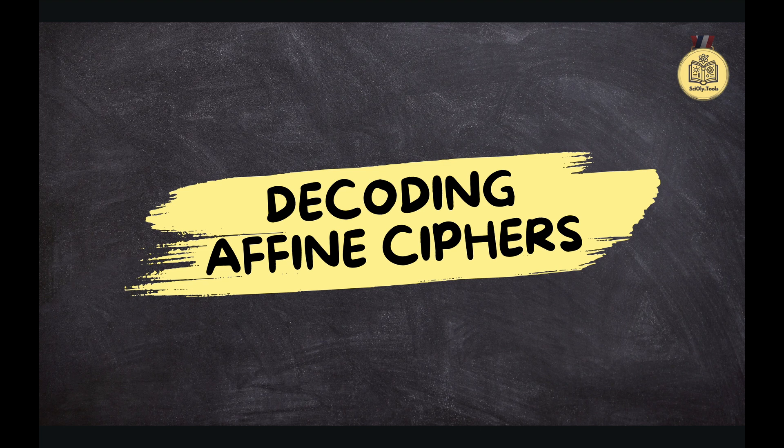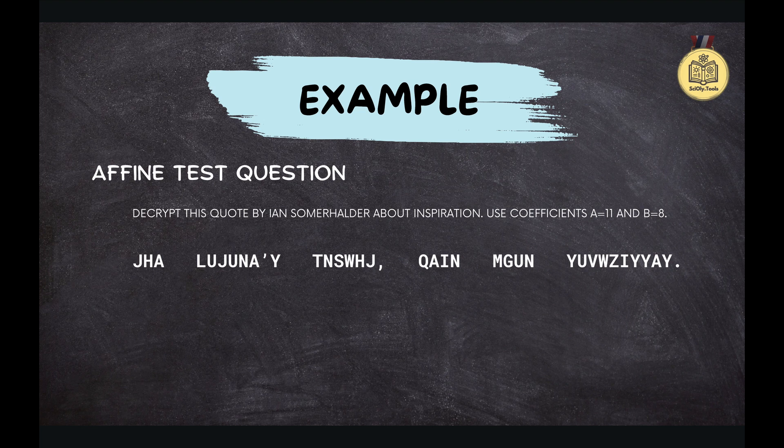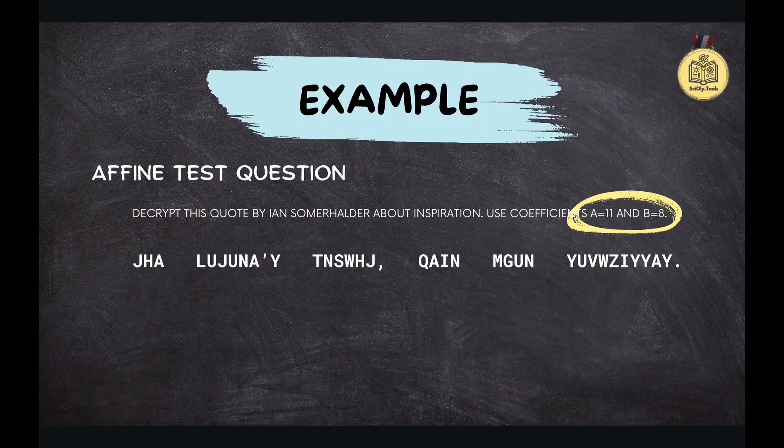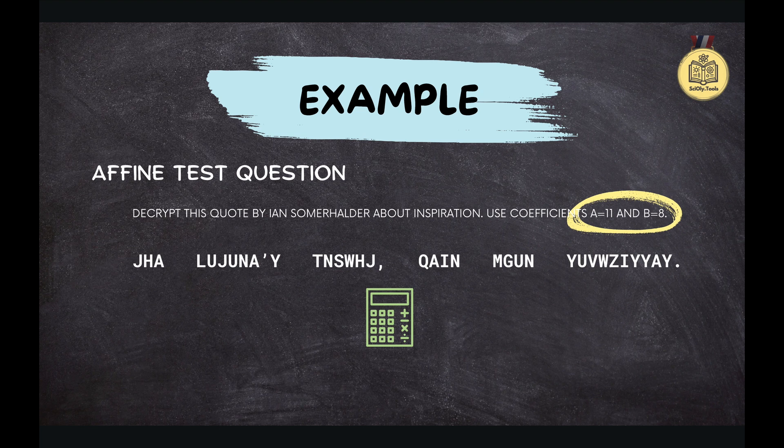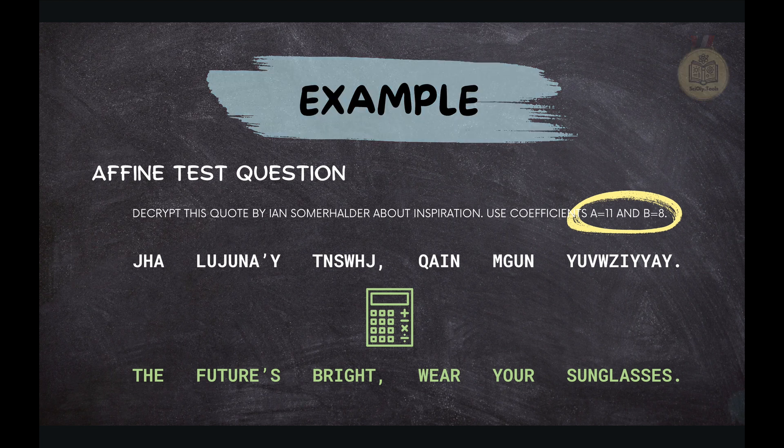Perfect for students and those super helpful parent coaches out there who are lending a helping hand. So let's actually take a peek at what a real exam question might look like. First up, you'll see a string of jumbled up letters, and that's your encrypted message. It could be a quote, a phrase, and to help you solve that puzzle, you'll be given two special numbers, usually labeled A and B, called coefficients. Different coefficients mean different ways of scrambling and unscrambling the message.